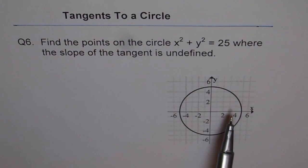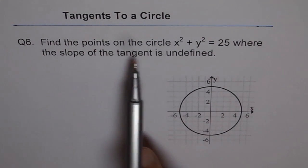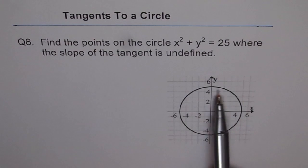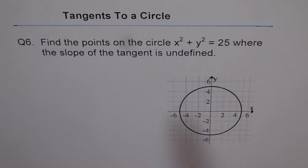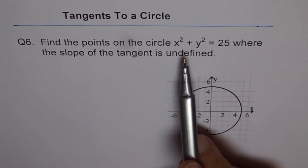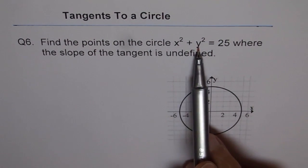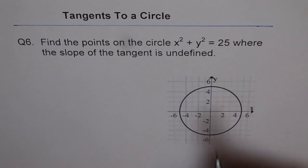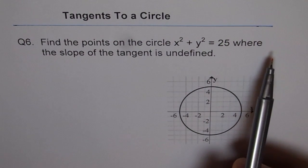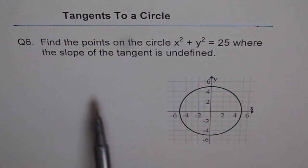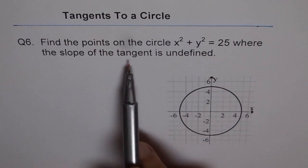Here in this question we have to find the points on this circle. The circle is already drawn for you. x squared plus y squared equals 25. So the equation of the circle says that center is at the origin and radius is 5. So you have to find the points where the slope is undefined.